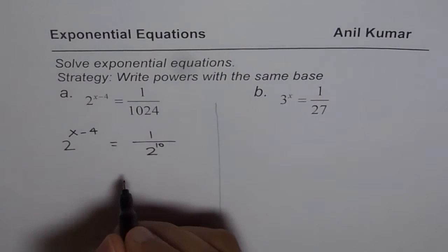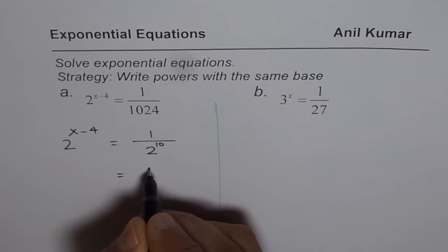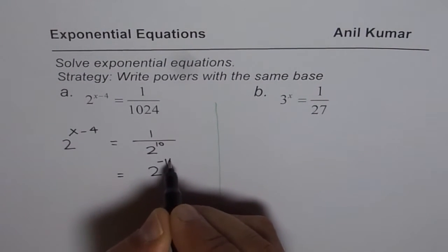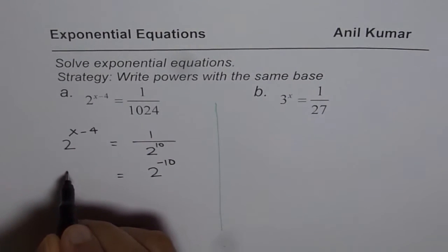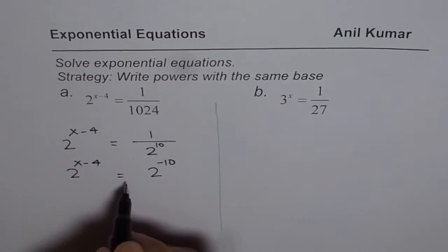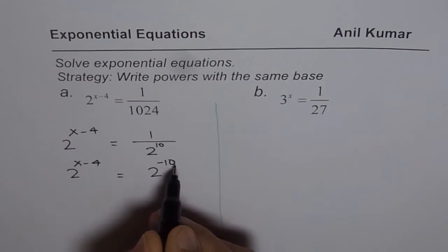Now when we write it in the denominator, then we could also write this as 2 to the power of minus 10. So now we get 2 to the power of x minus 4 equals 2 to the power of minus 10.